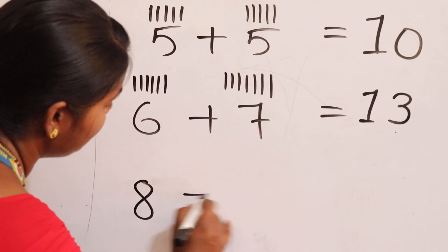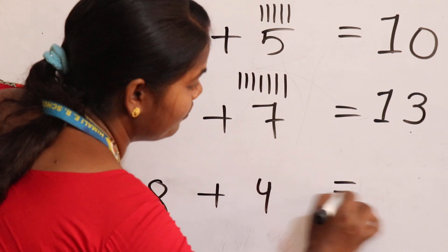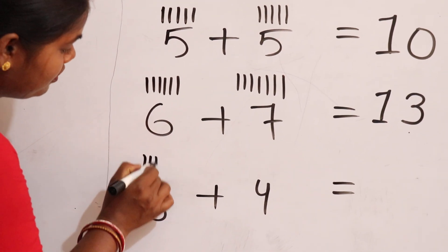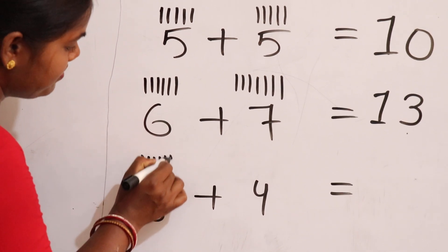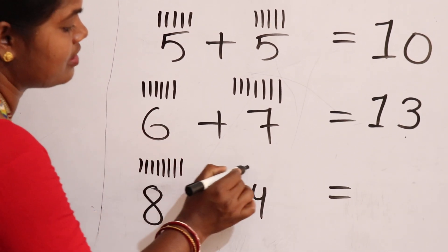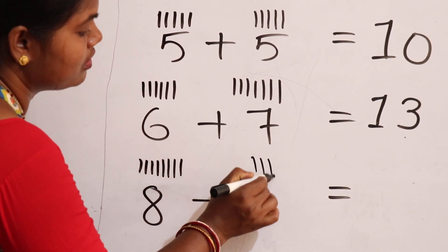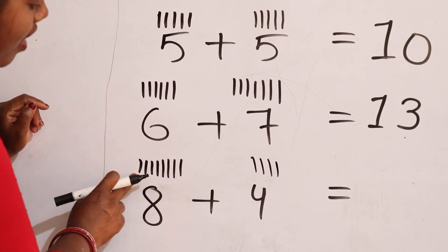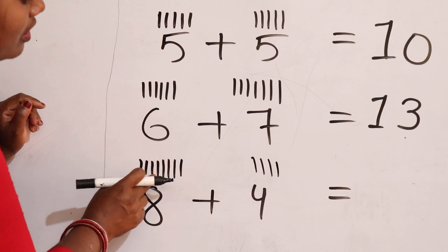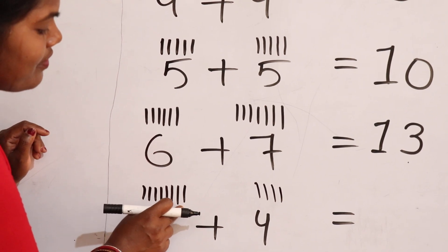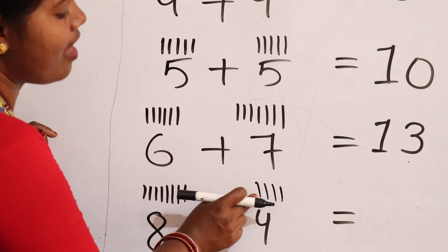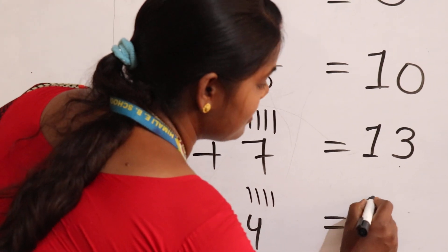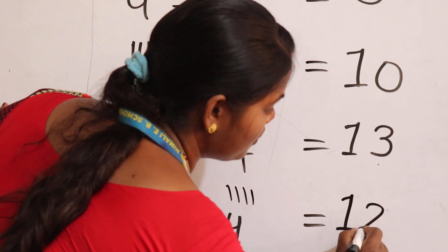8 plus 4. 1, 2, 3, 4, 5, 6, 7, 8, 9, 10, 11, 12. Answer is 12.